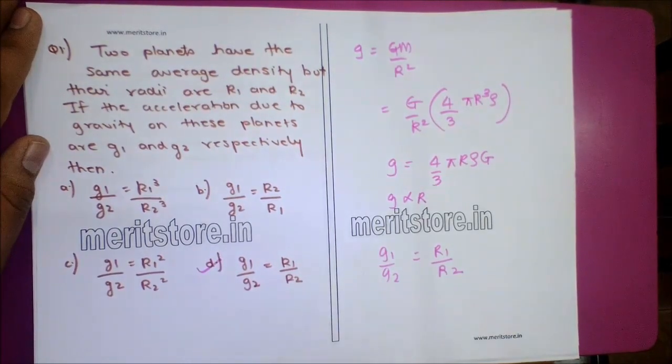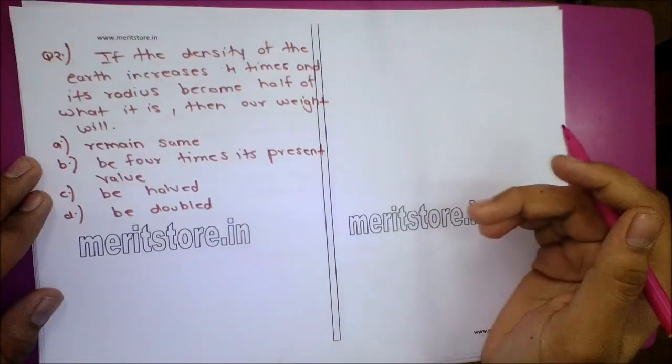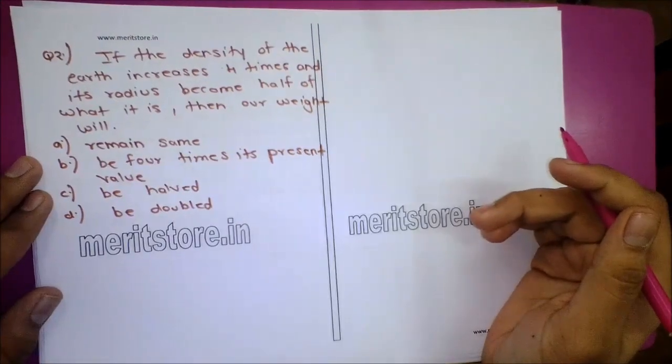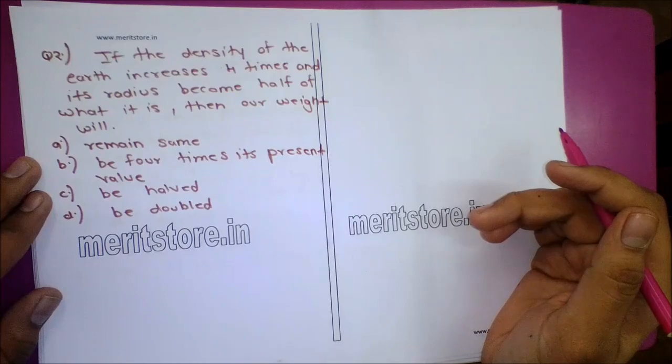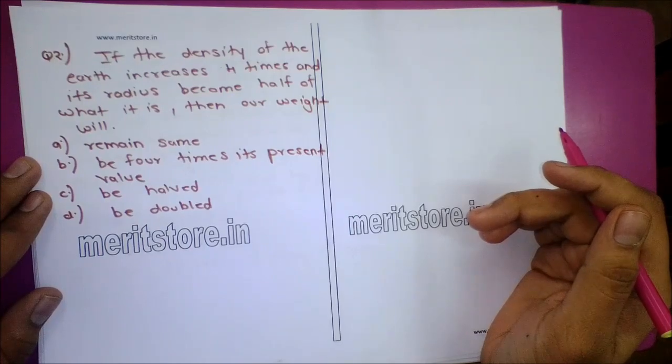Therefore G1/G2 = R1/R2. Option D is the correct answer.